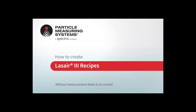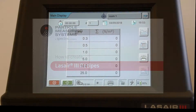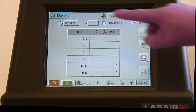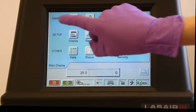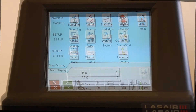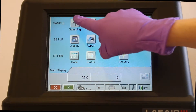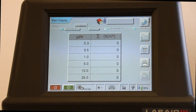This video provides a quick overview on how to create recipes for Particle Measuring Systems Laser 3. From the main screen, press Main Display. In the navigation panel, press Sampling.